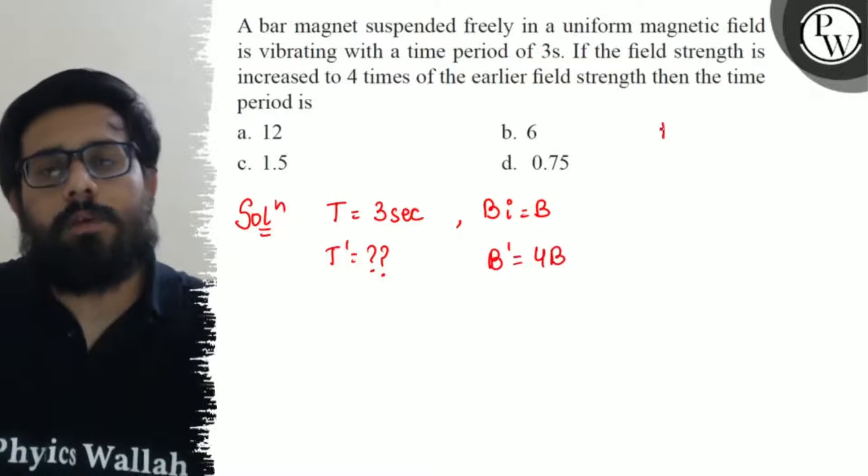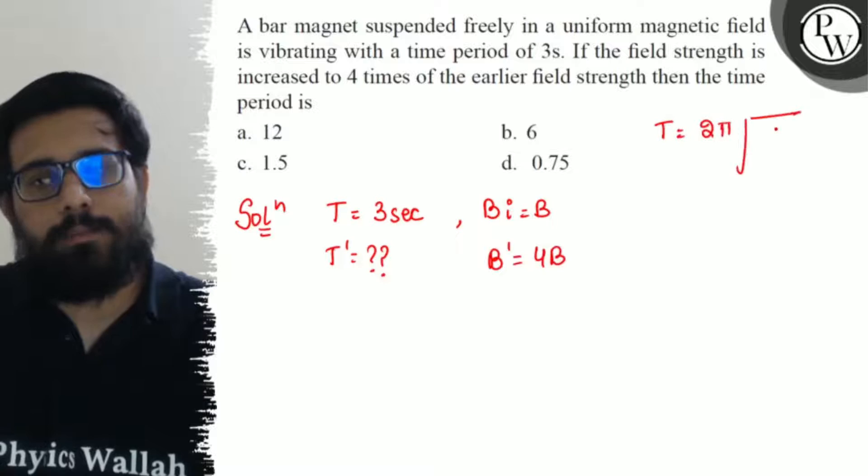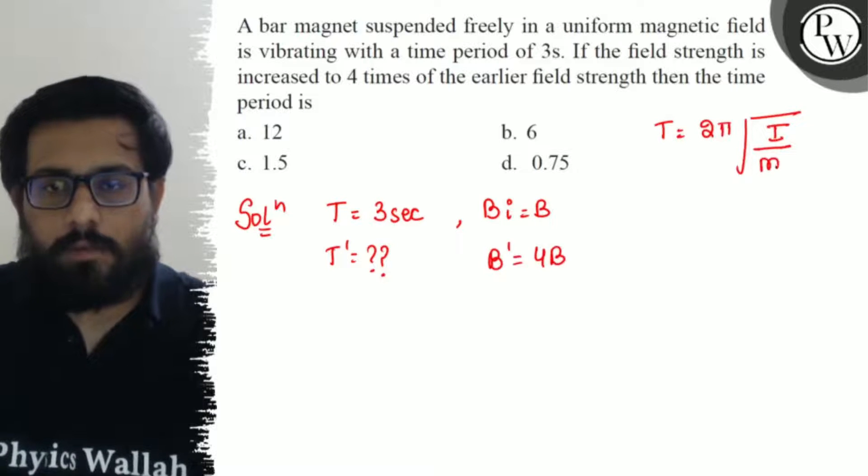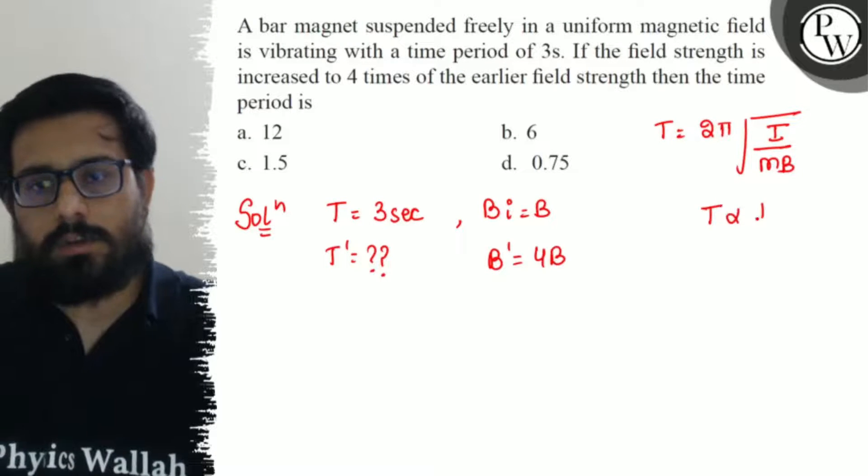Now from the relation T equals 2π under root I upon mB, we have T is inversely proportional to under root B.